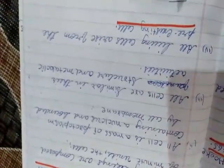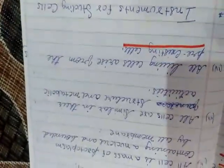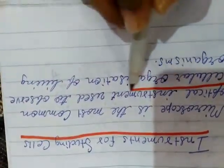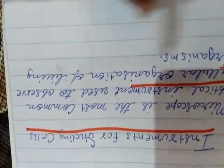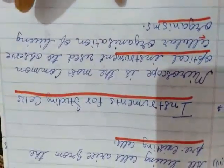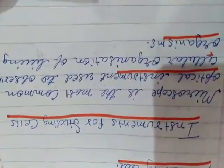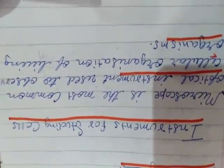For the study of microorganisms or the microscopic level of the cell, we require some instruments. The microscope is the most common optical instrument used to observe the cellular organization of living organisms. Because cells are very small units, we cannot study them without the help of an instrument.